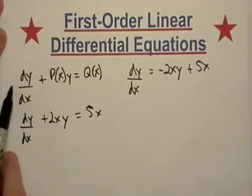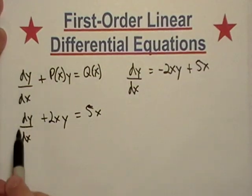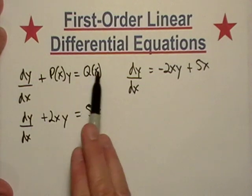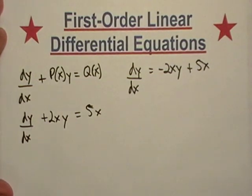and that'll just be plus 2xy, and that'll be equal to 5x. So all the numbers match over here, our derivative looks the same, I have 2x will be my P(x), y is the same, and then Q(x), well that's just 5x.